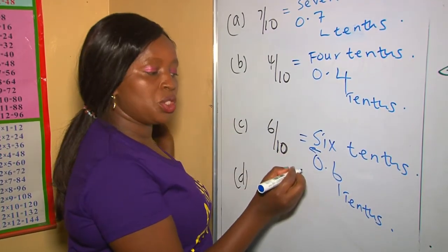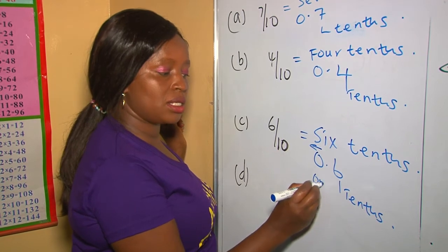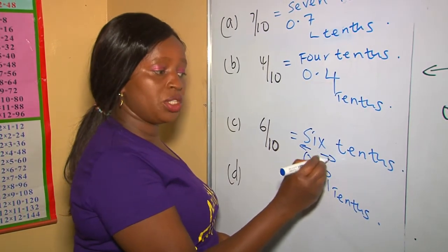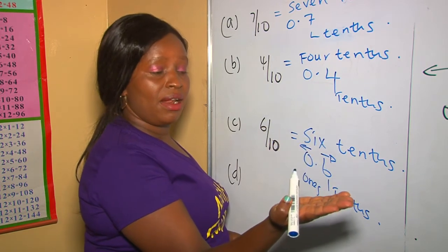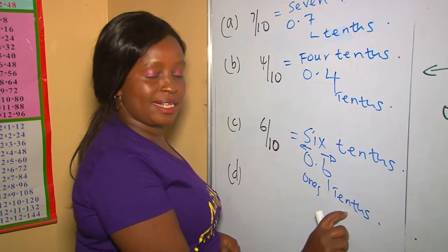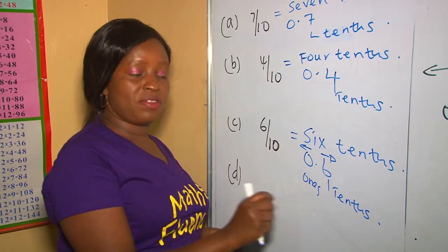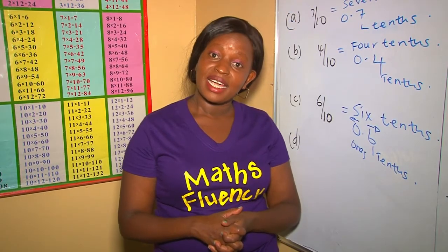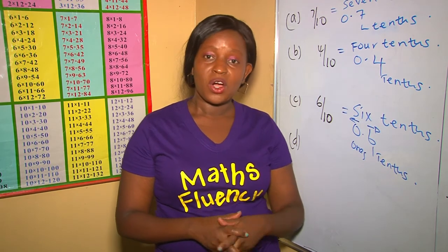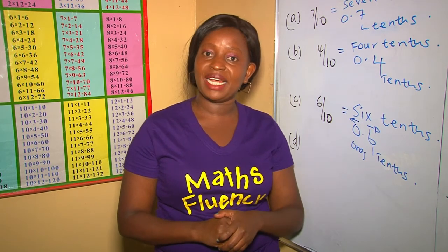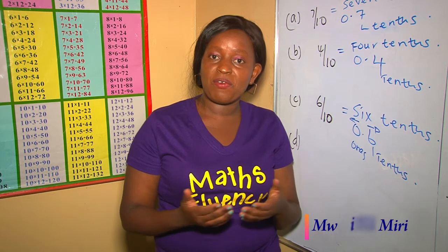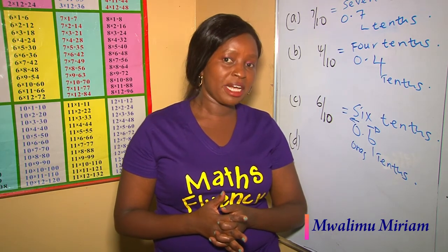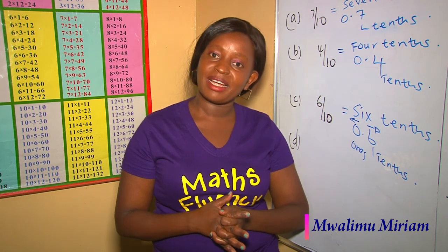Going towards the left we have ones, tens, and so on. Going towards the right of the decimal point, the place value of the first digit is tenths. I wish you the best, and kindly subscribe, press the notification bell, share with friends, and also practice. Remember, practice makes perfect. Thanks for watching, bye bye.